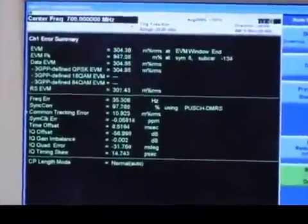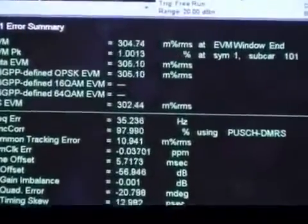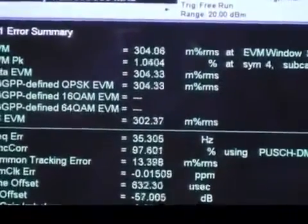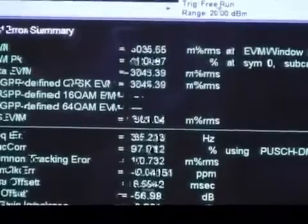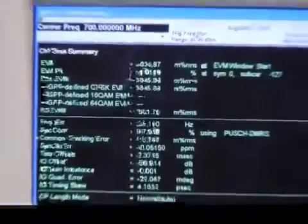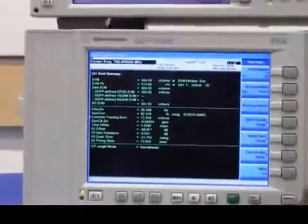We're going to focus on the EVM, which is the composite EVM, the first metric that's reported there. To make the measurement view easier, what I'm going to do is change the EVM metric to dB from the default percent.